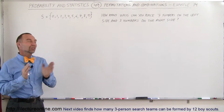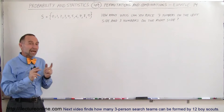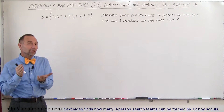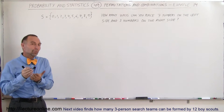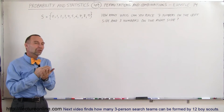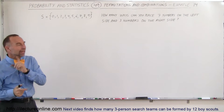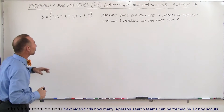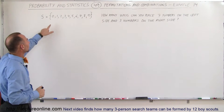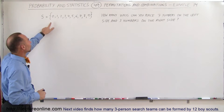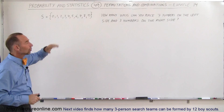Welcome to ElectronLine. In this example, we have to determine whether they're looking for the number of permutations or the number of combinations, given a sample space that contains numbers from 0 to 9.